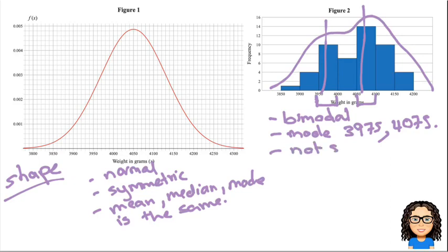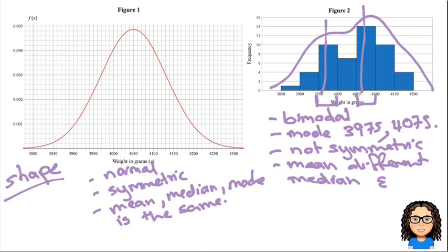Obviously, it is not symmetric. And the mean would be different from both the median and from the mode. Because it's not a symmetric distribution. So that's the first thing that I would want to put.